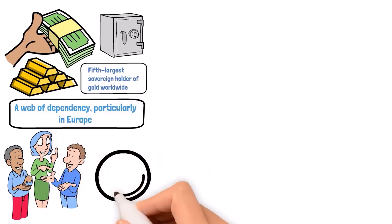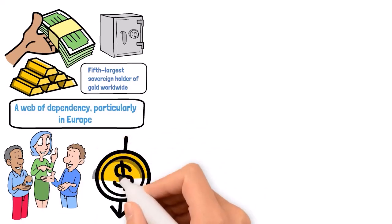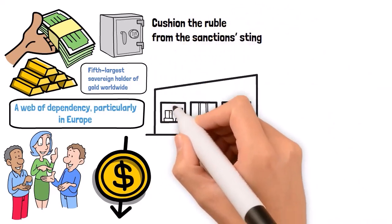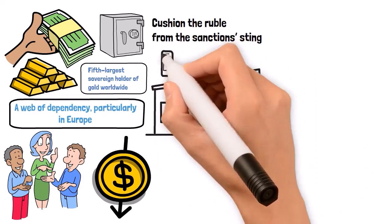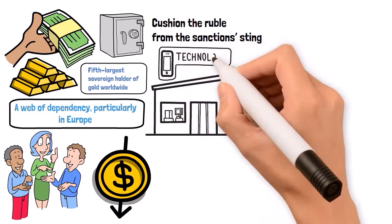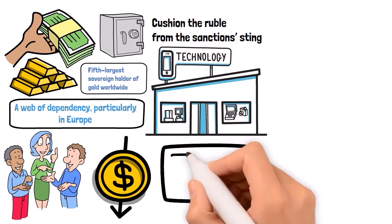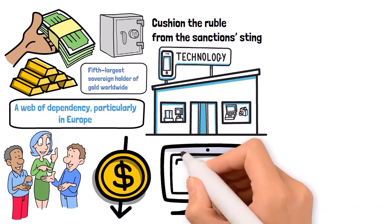Although the ruble has been on a wild ride with sanctions sending it into freefall at times, Russia has fought back with a de-dollarization strategy, reducing its reliance on the US dollar and shifting towards other currencies in international trade. This move aims to cushion the ruble from the sanctions sting. In the digital domain, Russia has been pushing to develop its own tech sector, aiming to reduce reliance on Western technology. Initiatives like the Skolkovo Innovation Center are testament to this drive. But with sanctions tightening like a noose, will these measures provide the economic oxygen Russia needs to breathe freely in the global market?